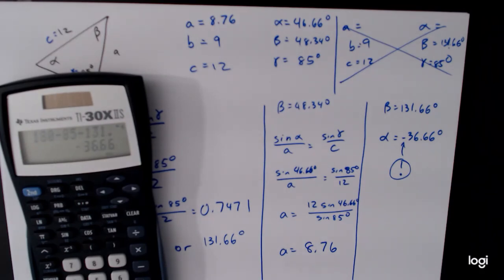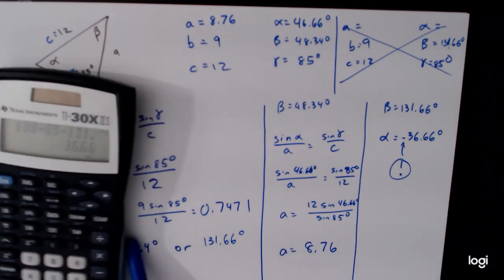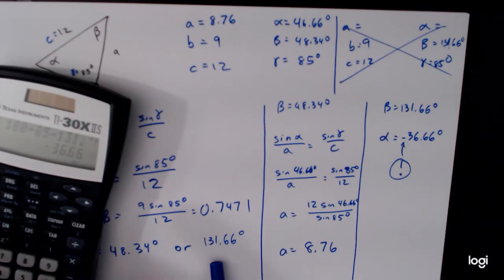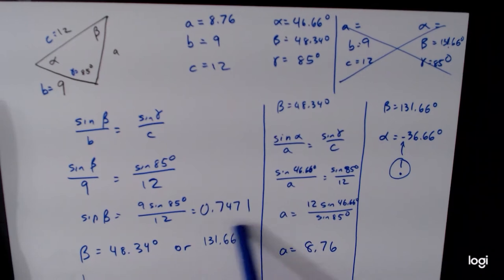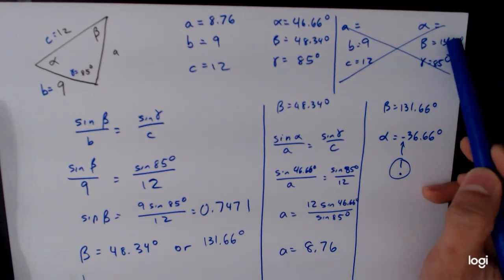You just have to do the work, do the calculations, and think about the results you're getting. In this case, it looked like we were setting ourselves up for a situation with two triangles and then we did the calculation and realized, oh, maybe that's not what's happening. The point is that you have to check. You won't know in advance whether or not this angle here is going to work until after you start to work it out.